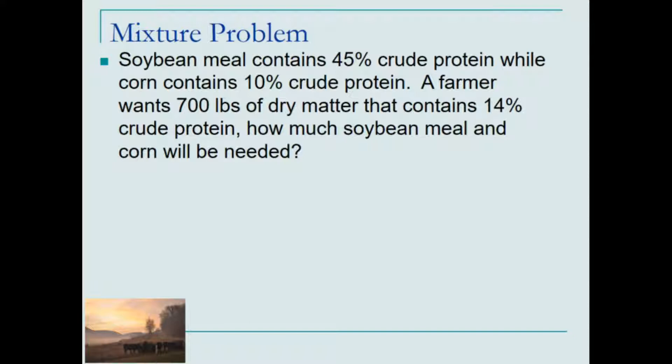Soybean meal contains 45% crude protein, while corn contains 10% crude protein. A farmer wants 700 pounds of dry matter that contains 14% crude protein. How much soybean meal and corn will be needed?